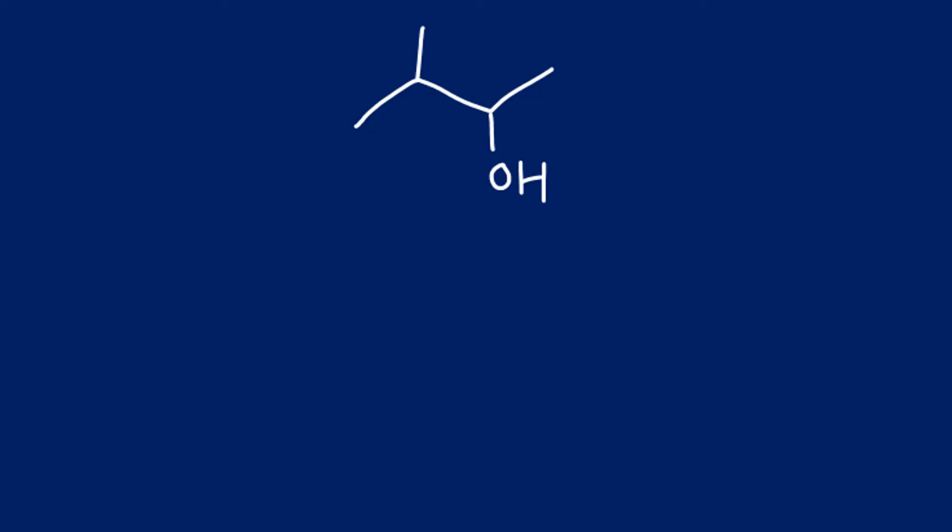Next up: one, two, three, four. We've got an alcohol and we've got a methyl this time. Let's number them both ways: one, two, three, four. Because I've identified this as an alcohol, I need to go with my lowest number for the alcohol, which is two, so this is butan-2-ol.